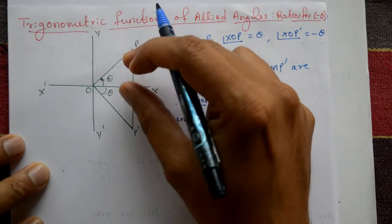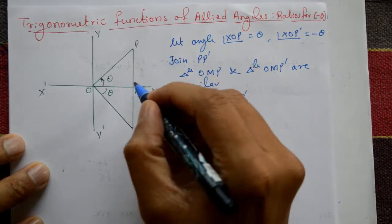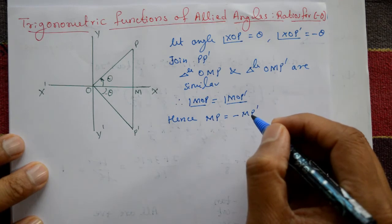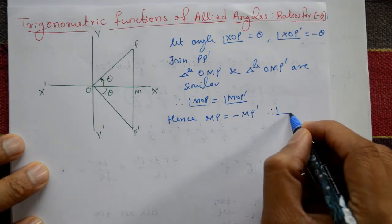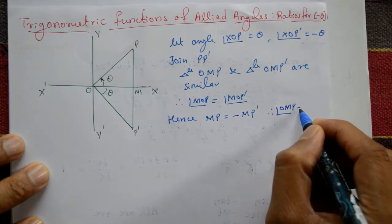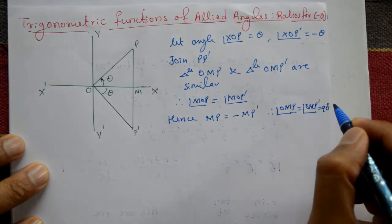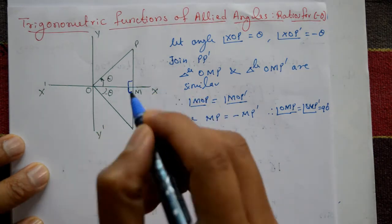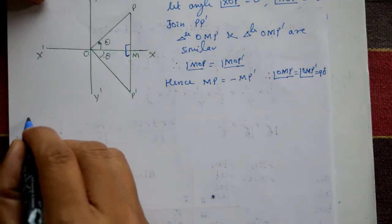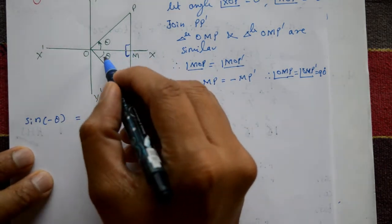MP is on the positive side of the x-axis and MP dash is on the negative side, so MP is equal to minus MP dash. Angle OMP and angle OMP dash are both equal to 90 degrees — both angles are the same.